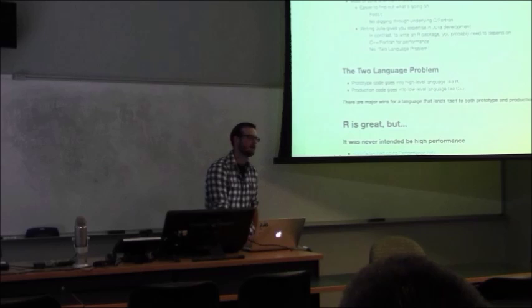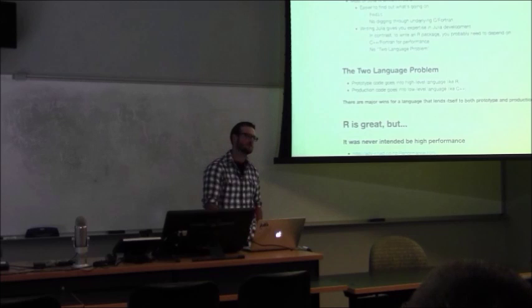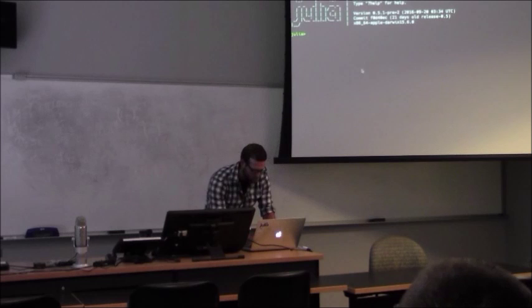Most of Julia is written in Julia, so it's easier to find out what's going on. A lot of R and Python packages are written in C and Fortran and other things. Whereas with Julia, if you don't know what's going on, you just have to read their Julia code, which is a lot easier to read.